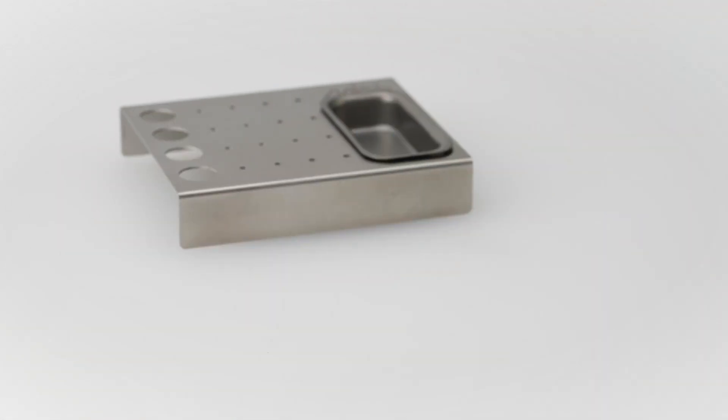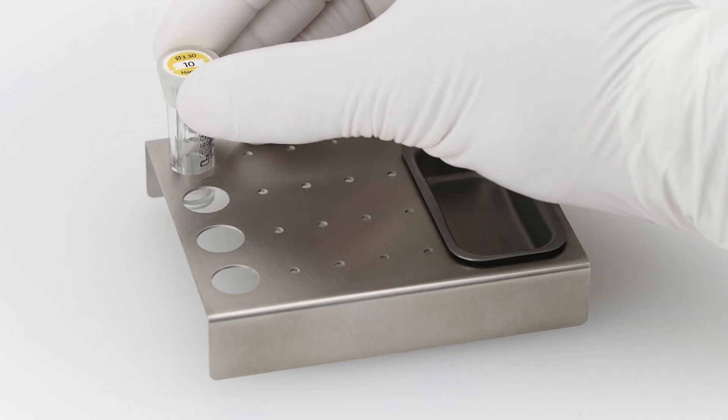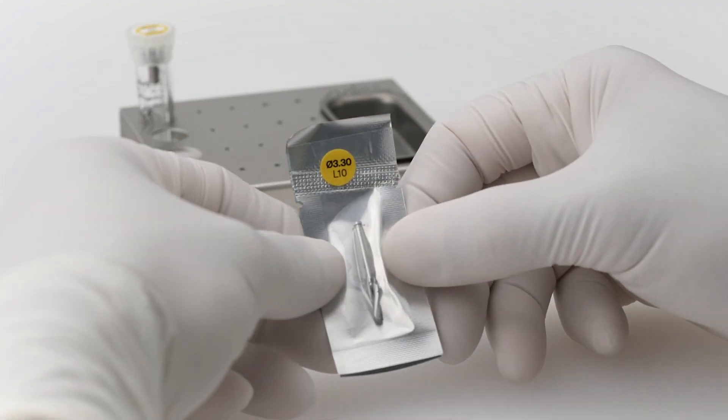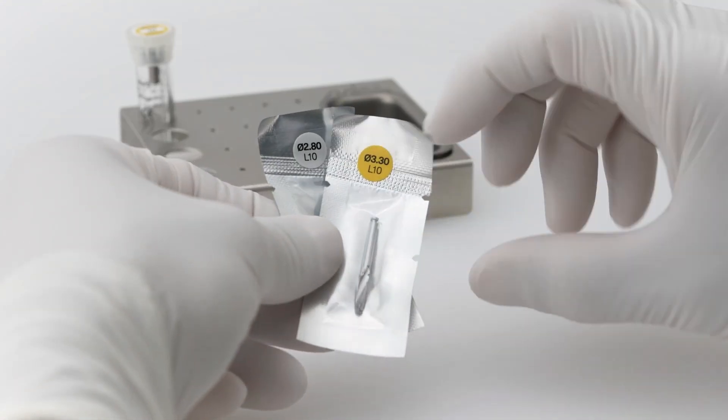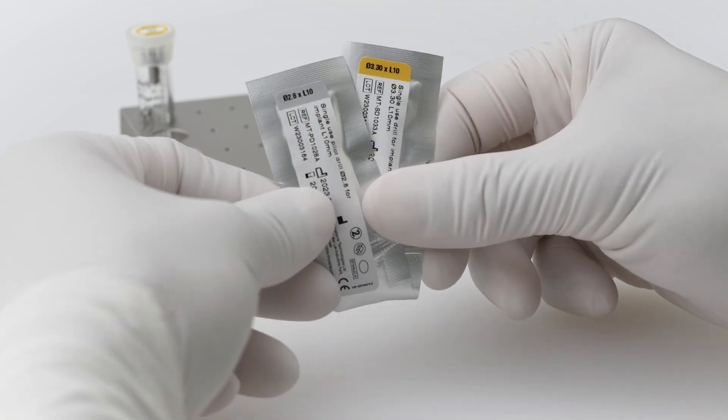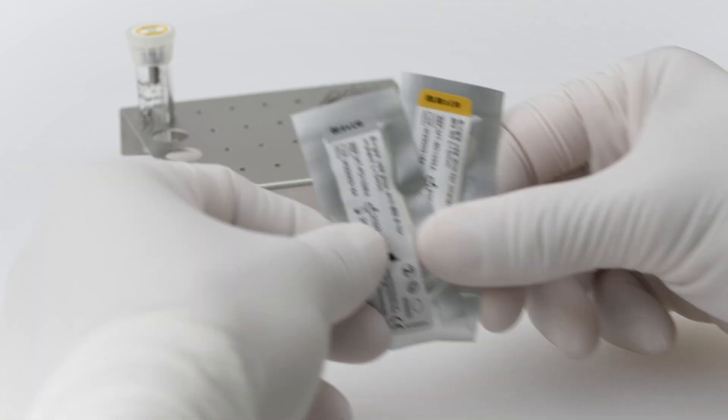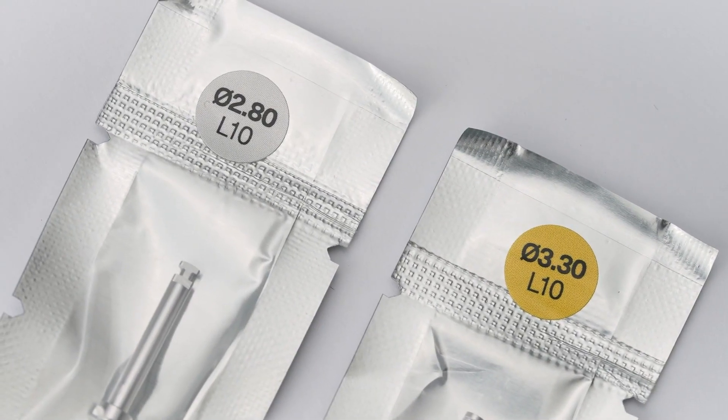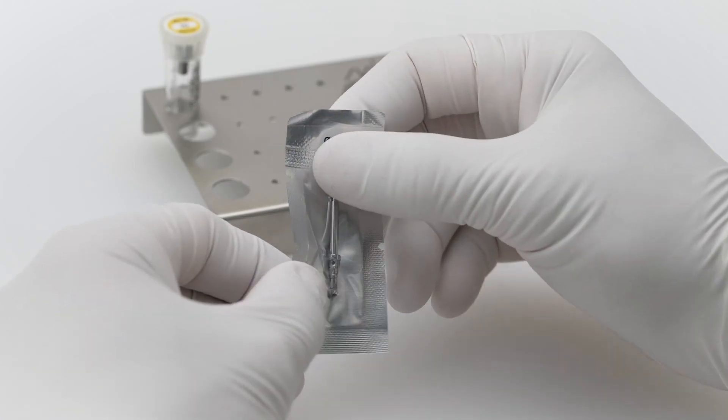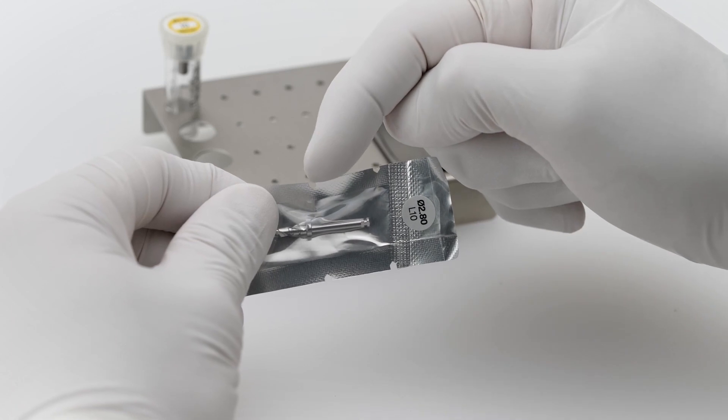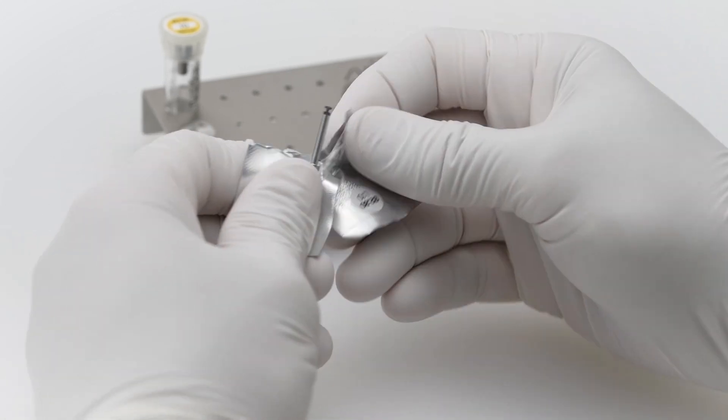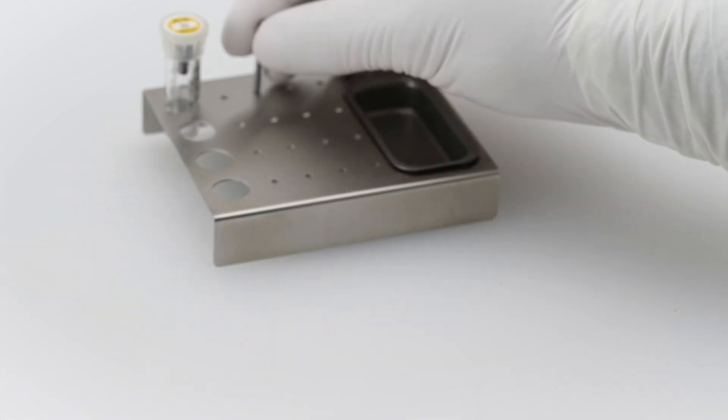Open the implant package and place the inner tube on the organizer tray. XD drills are provided in a sterile color-coded pouch for easy identification. In accordance with the drilling procedure and consistent with the existing MIS color-coding, carefully open the sterile pouch and place each drill in the tray next to the corresponding implant according to the procedure workflow.